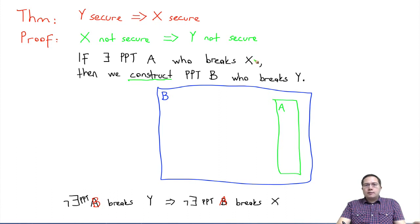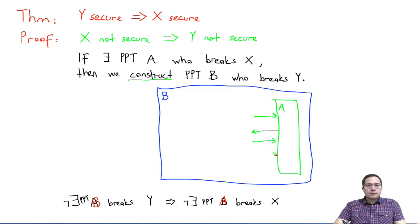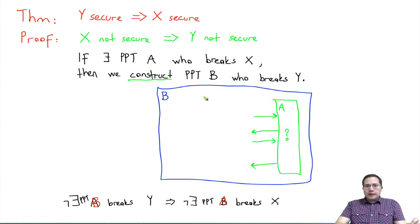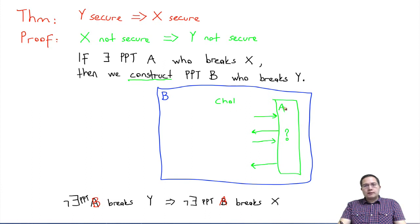How B interacts with A is defined exactly as in scheme X — remember the challenger-and-adversary based definitions. A is going to be the adversary, so it will receive some particular input from the challenger, maybe send something back, receive something again, and then finally output. In this game A will be the adversary and we have no idea how A works. B, on the other hand, we need to construct — we need to define the pseudocode here. B will act as simulating the challenger to the adversary, so the code here should look similar to the challenger in scheme X's security experiment, as far as A is concerned.